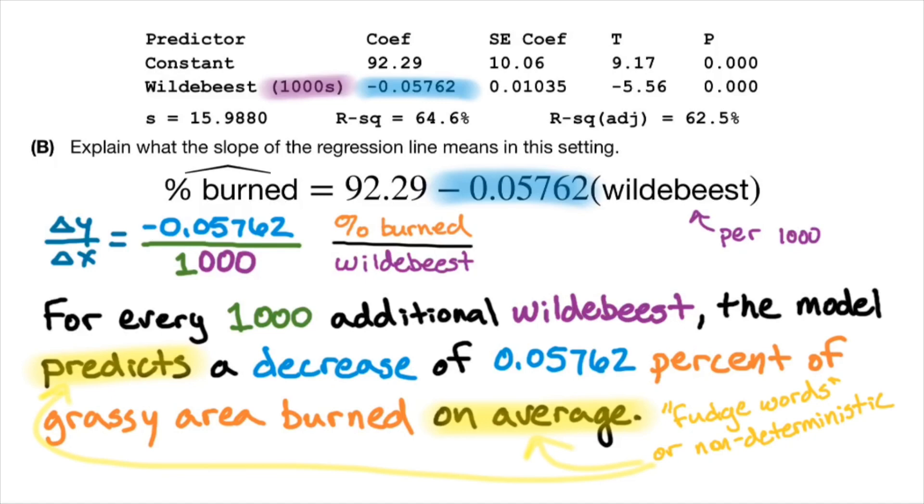And secondly, I want to point out that if it doesn't make sense to you, why are we caring about a decrease of 0.05762% grassy area burn, when that doesn't seem like a lot, might sometimes be helpful to move that decimal place a little bit to the right or to the left.